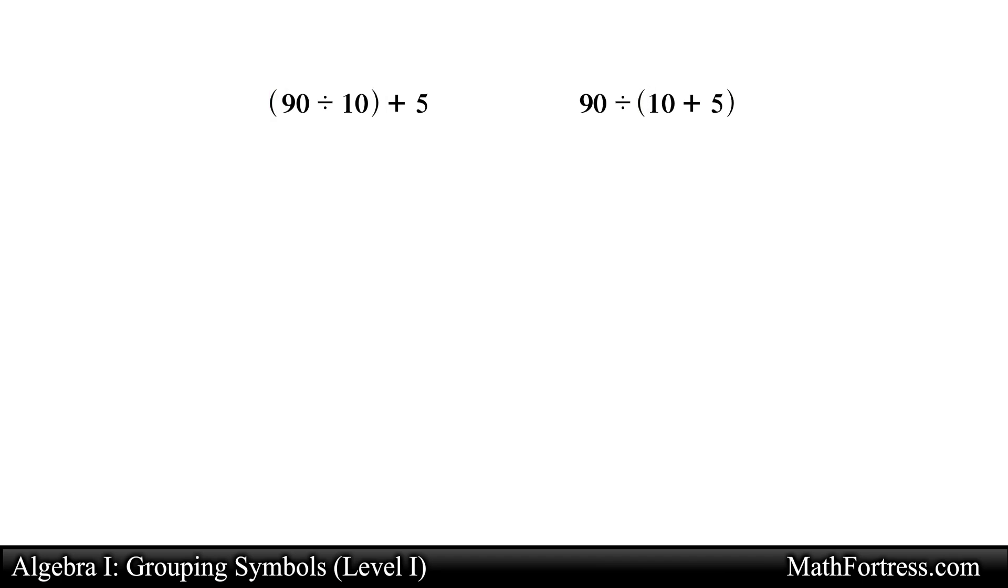Let's simplify the first expression. Here, we need to simplify the expression in the parentheses first. 90 divided by 10 signifies to 9. Now we add 5 to 9, which signifies to 14.